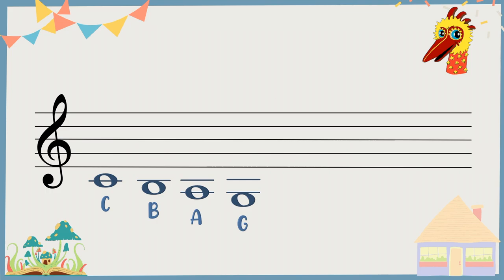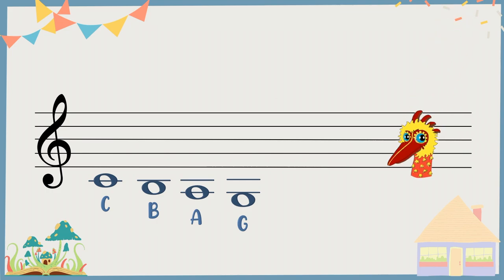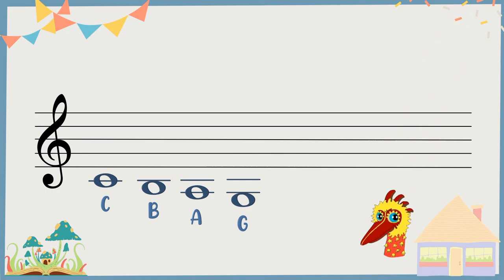What about the ones above the stave? Here. The top line note is an F. So the ledger space above is a G. Draw a ledger line, draw a note — this is A.